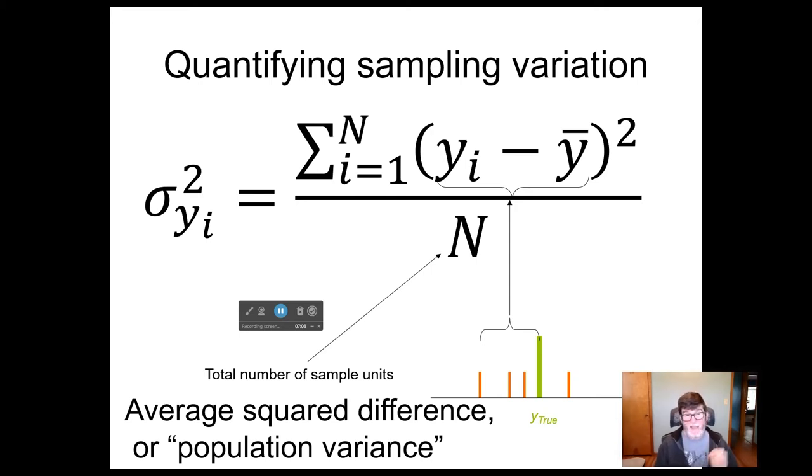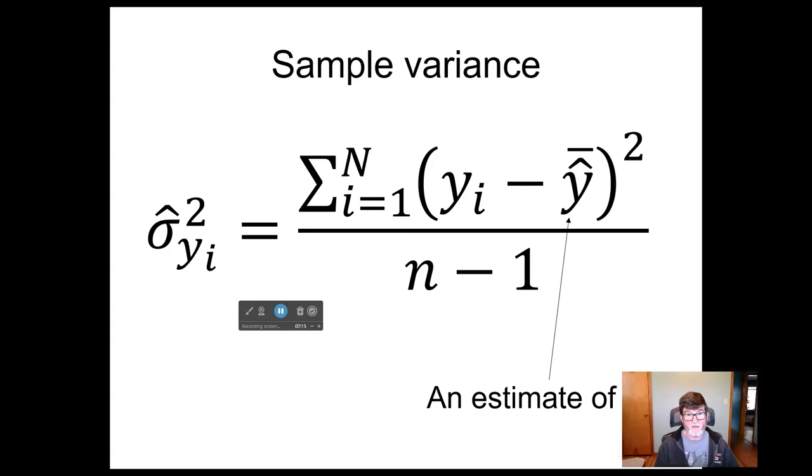What we can get is an estimate of the variance, and we call that the sample variance. And we calculate it in much the same way, except that instead of our true value here, we have our sample mean, our estimated mean. So we look at each of our observations, we get the difference between that observation and the sample mean, and we square those, we add them up, and we divide by the sample size minus one. And the reason why we divide by minus one is because what we have here is an estimate of y. So we've already used up, if you like, one data point to calculate the mean. And so we have fewer data points to estimate our variance.